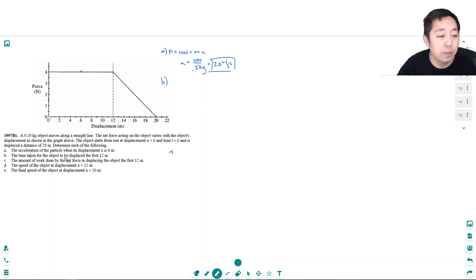B, the time taken for the object to be displaced the first 12 meters. Well, over this time the force is constant, so the acceleration is 20 meters per second squared. So because it started initially at rest, I can find the time taken.